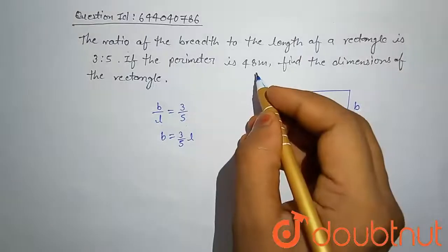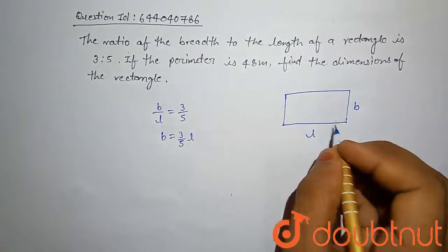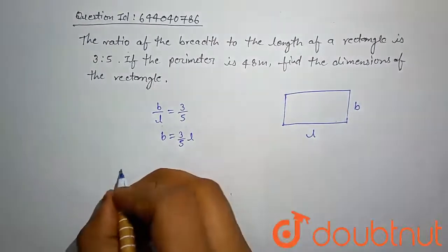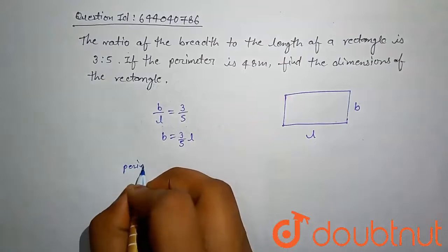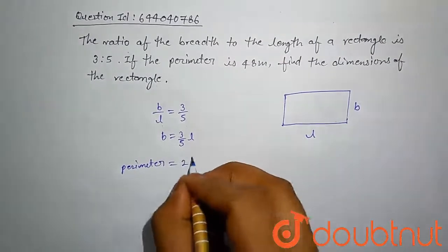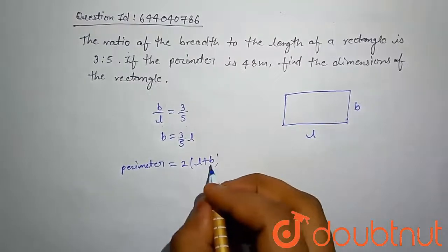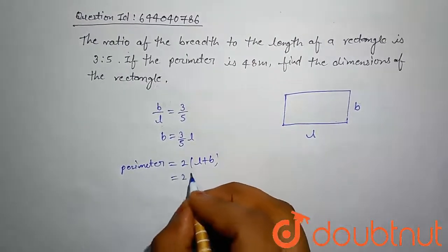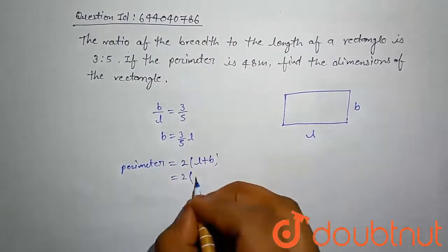Here b is equal to 3 by 5 l, and perimeter of this rectangle is given 48 meters. First we have to compute perimeter of this structure. Perimeter of rectangle is 2 times l plus b.